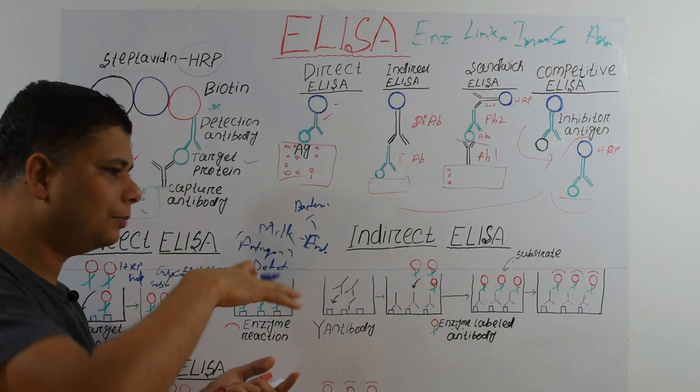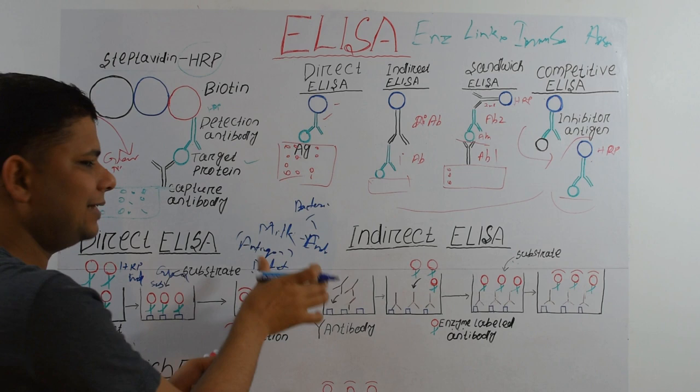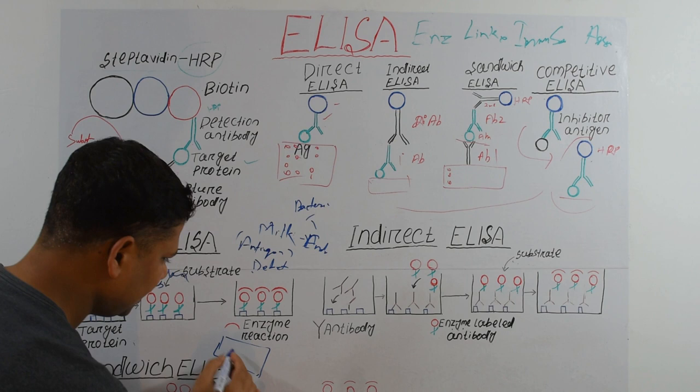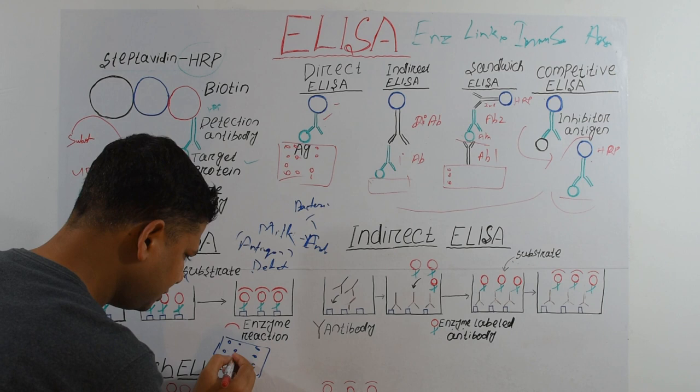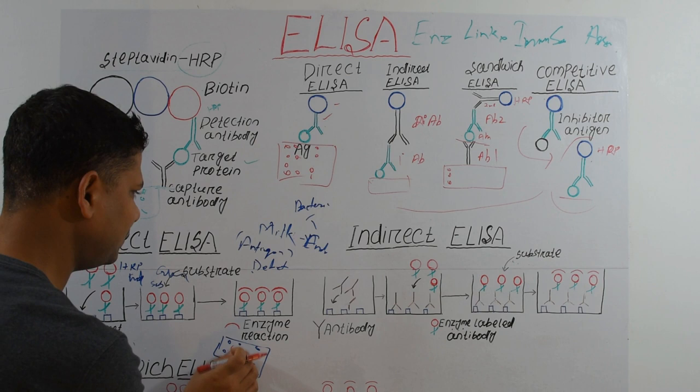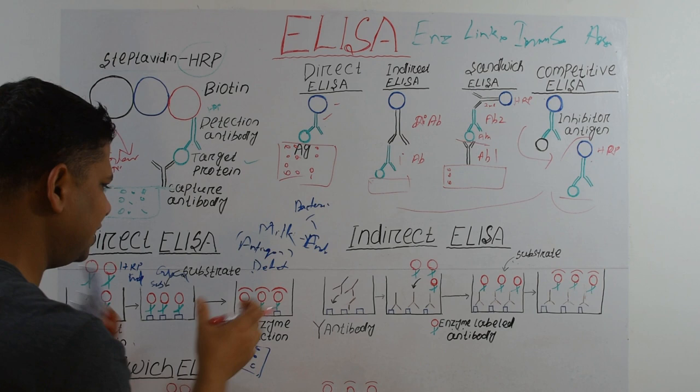In this way, we can detect across multiple wells simultaneously. Since we put different milk samples in different wells, we check which well is glowing. If a particular well glows, that means the milk sample in that well contains endotoxin. This is how we detect antigens using Direct ELISA.